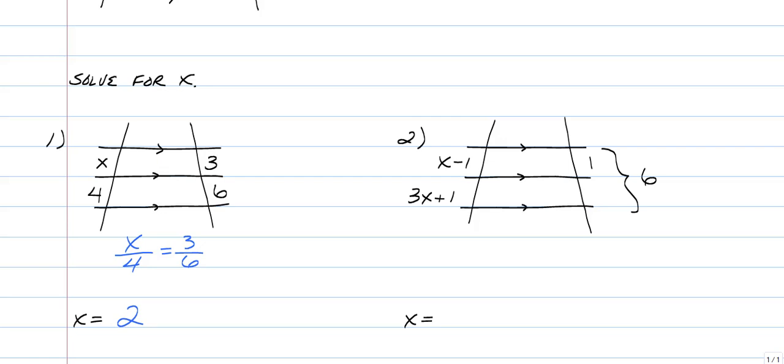Number two, this one you can set up a couple of different ways. You can do X minus one over one is equal to four X over six if you want to do the whole thing. But what I would find the easiest way to do it is if we know this whole thing is six and the top is one, the bottom part has to be five. So what I would have done is X minus one over three X plus one is equal to one over five.